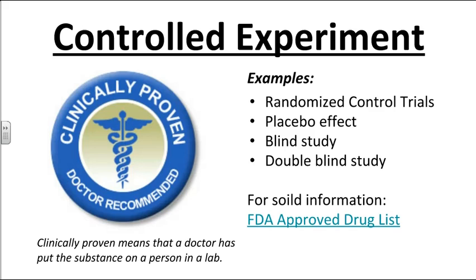In a blind study, patients don't know if they're getting the treatment or the placebo. In a double-blind study, neither the researchers nor the patients know who is receiving the treatment versus the placebo. This is to mitigate the effects of the brain — if you know you're giving someone a drug, you'll act differently than if you know you're giving them a placebo. Double-blind studies help prevent those kinds of biases.